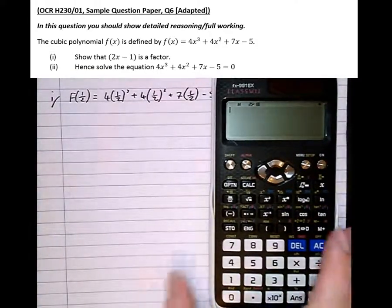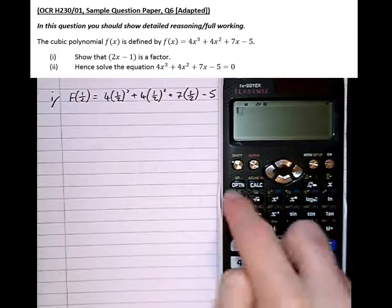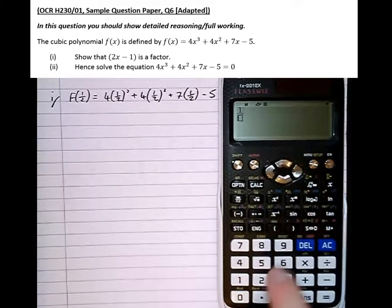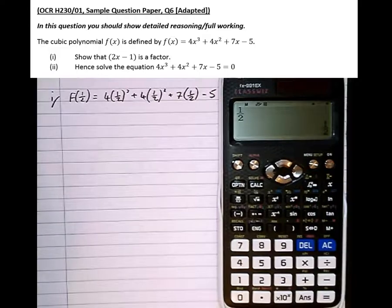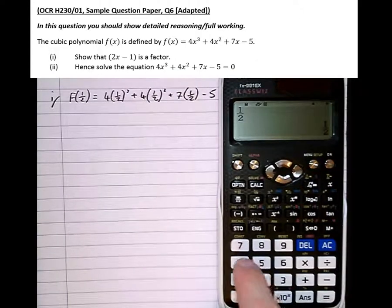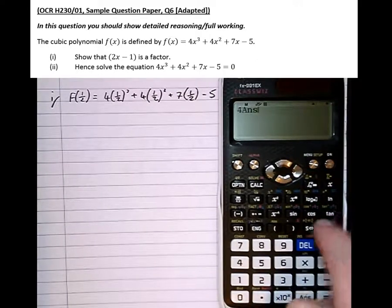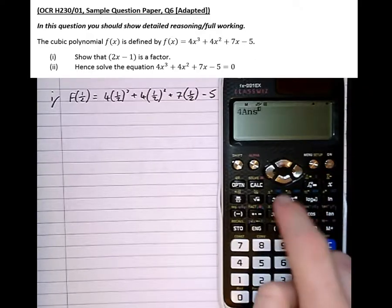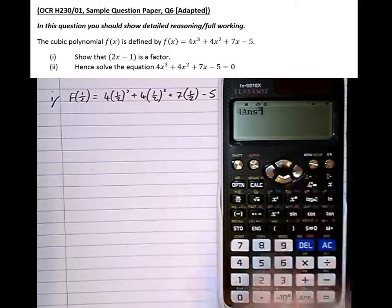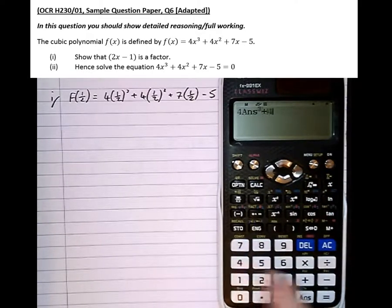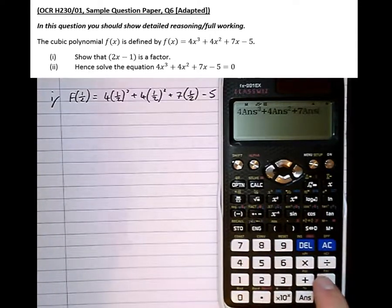But a quicker way of doing it is typing in 1 half the thing we're subbing in, then pressing equals. So now that's saved in the answer button. So if I do 4 answer cubed, it saves me writing brackets and fractions, plus 4 answer squared plus 7 answer minus 5 equals 0.